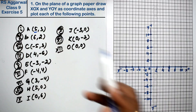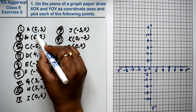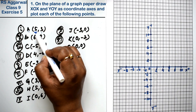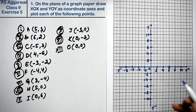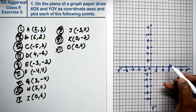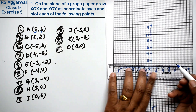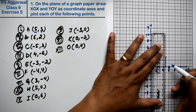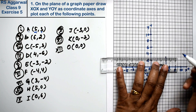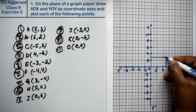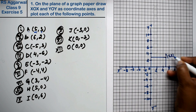Now if you want to plot a point where x is 5 and y is 3 — x is 5 and y is 3. Both are positive so this point lies in the first quadrant. So this is point A at (5, 3).